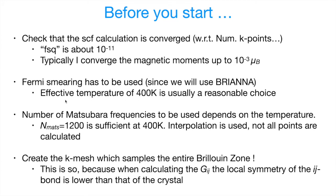Number of Matsubara frequencies, of course, will depend on the temperature. 1200 is a good number for this temperature. But we don't need to calculate all of them. We can use interpolation scheme. And in practice, we calculate maybe only 100 of them. And finally, we will have to prepare one more KMESH file, which will span the entire Brillouin zone.